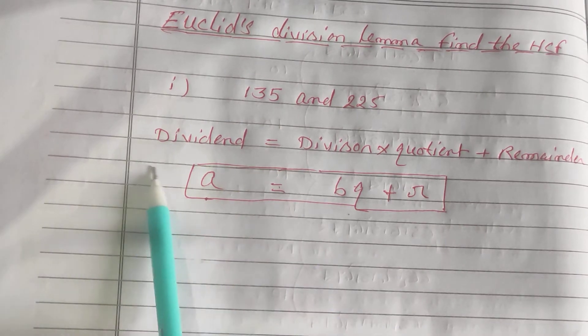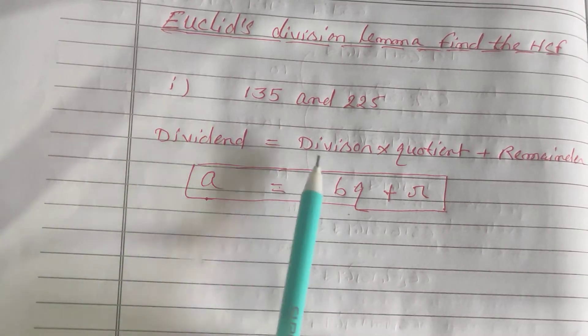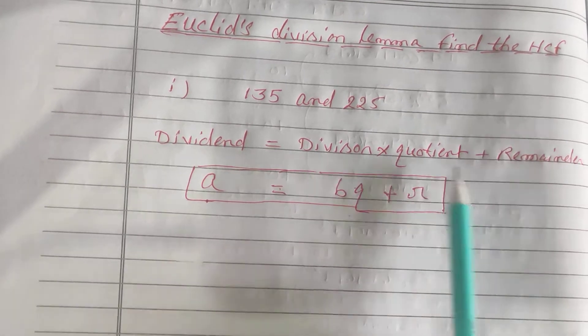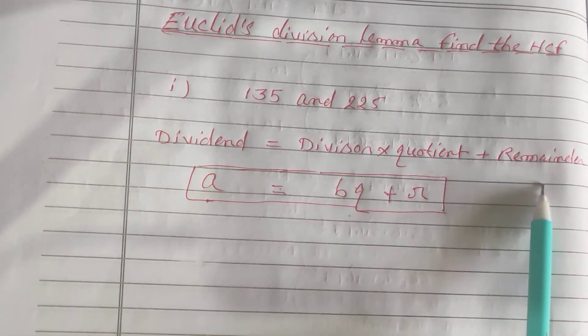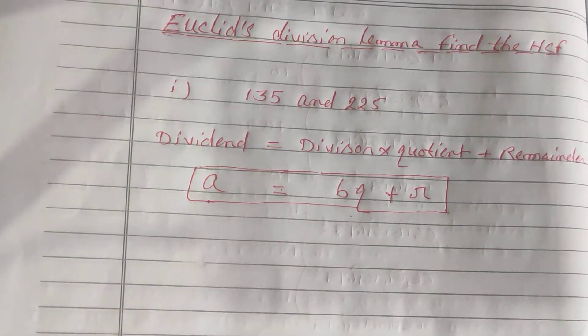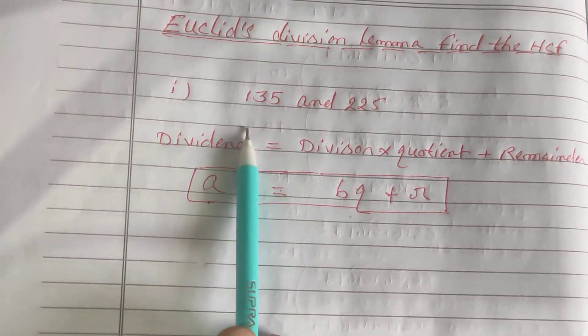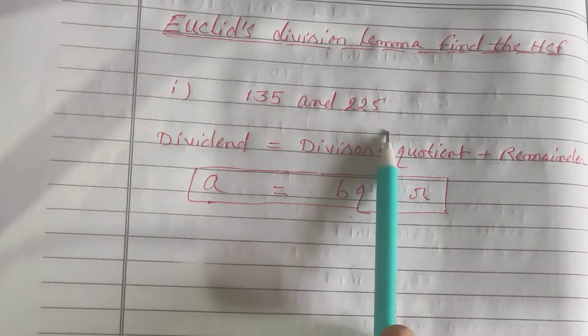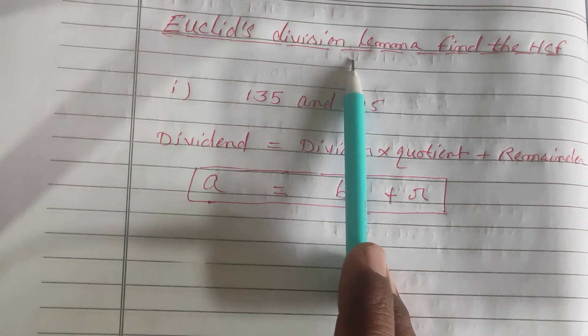I have written here: dividend equals divisor into quotient plus remainder. This is a Lemma which we will use to find HCF of two or three given numbers like 135 and 225.